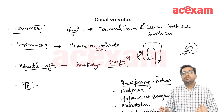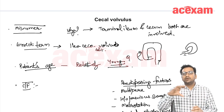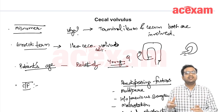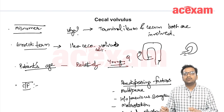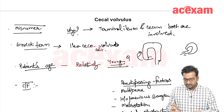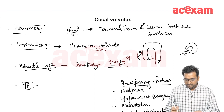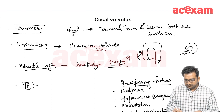In sigmoid volvulus, as it is a closed loop obstruction, there is no bilious vomiting. In cecal volvulus, the clinical features are those of small bowel obstruction.